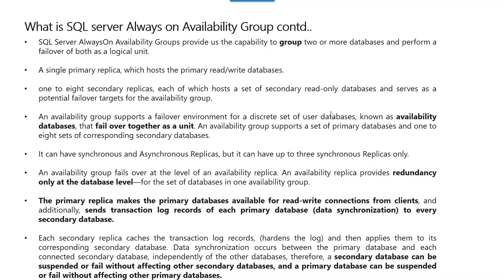SQL Server Always-On Availability Group provides the capability to group two or more databases which perform a failover as a single logical unit. It supports at least one single primary replica which is used to read and write the databases, and then one to eight secondary replicas. Each of these databases can be read-only databases, and these serve as potential failover targets for the overall availability groups.